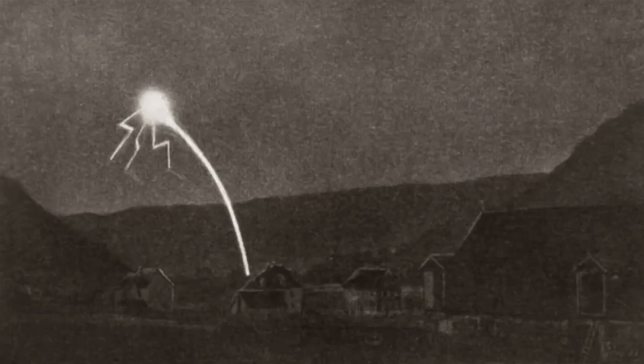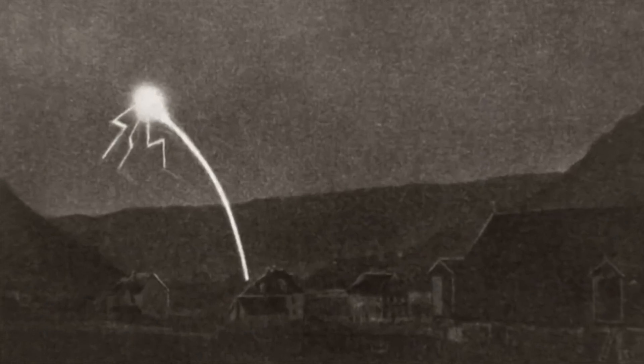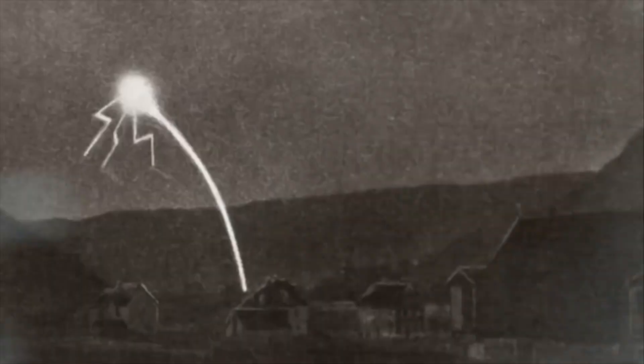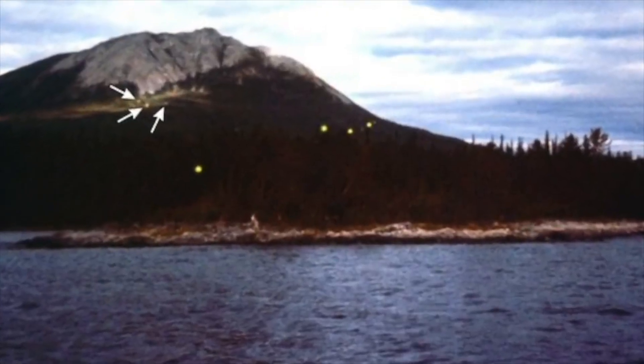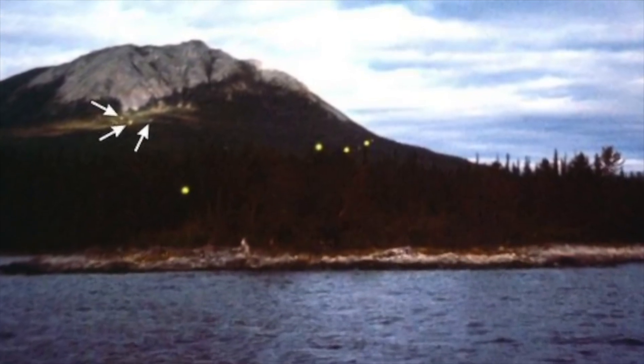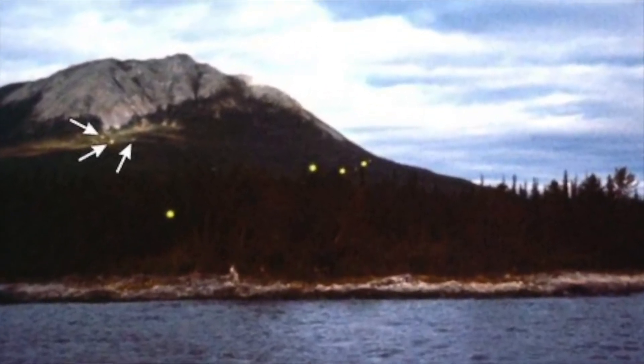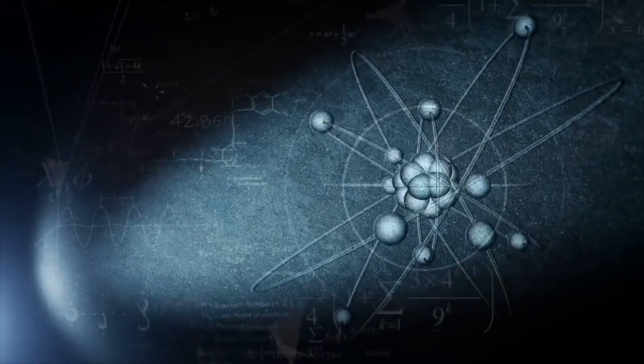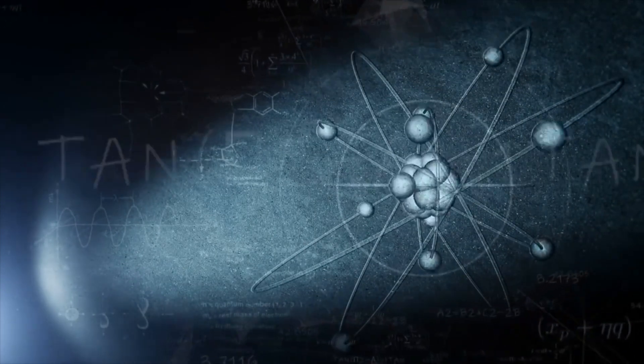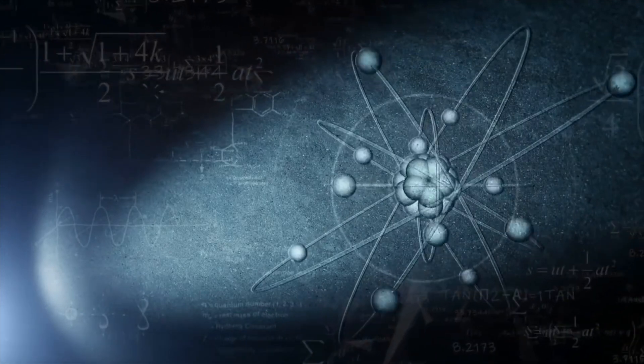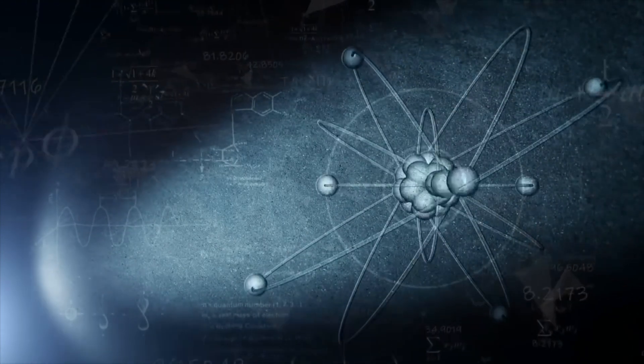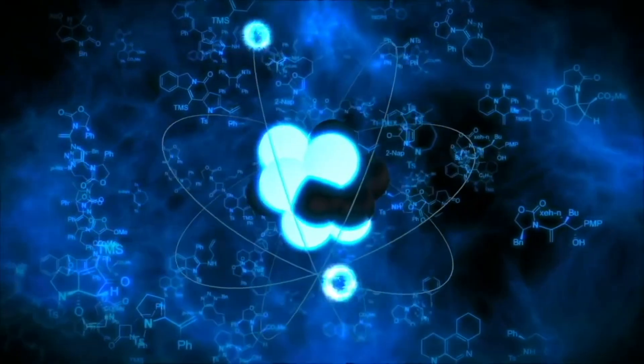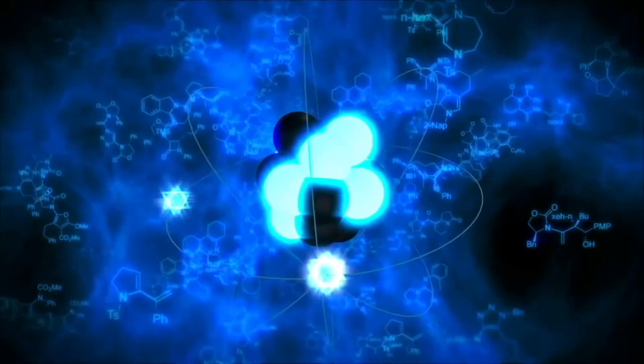For centuries, eyewitnesses have reported seeing an inexplicable phenomenon - strange lights emerging from the ground or weird glowing lights in the sky. These are known as earthquake lights. Today, a fascinating new theory confirms they are real and offers a possible explanation, one drawn from existing laws of physics that explains how rocks under immense pressure might emit light.